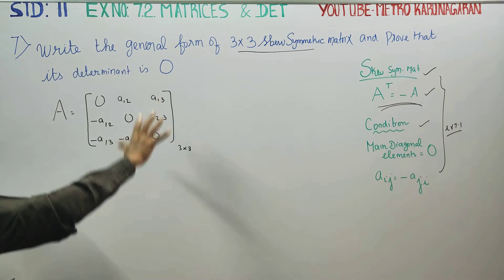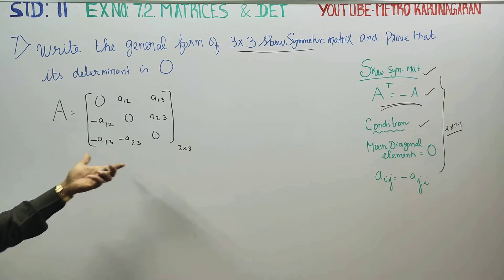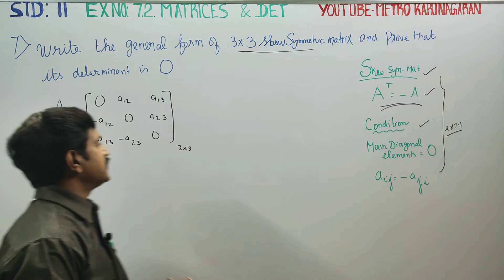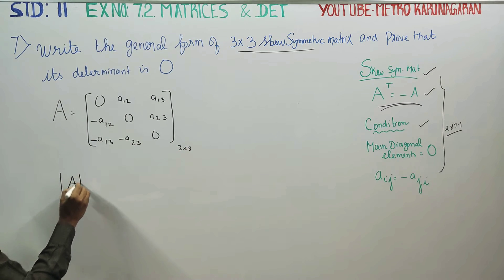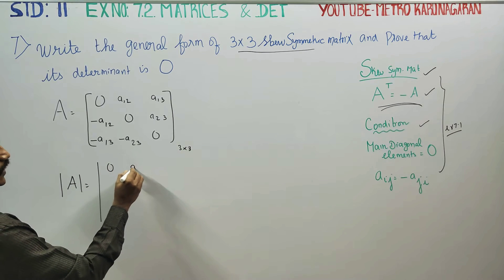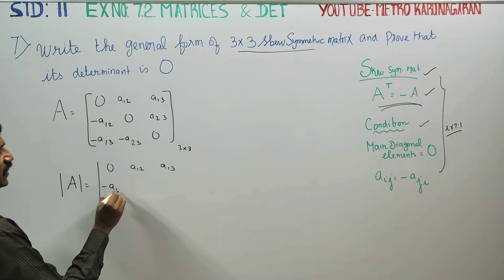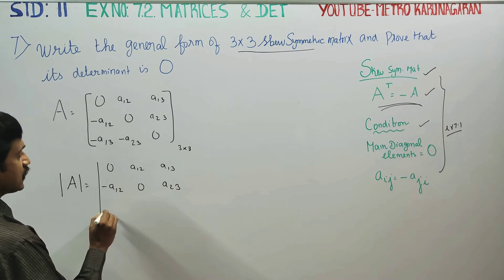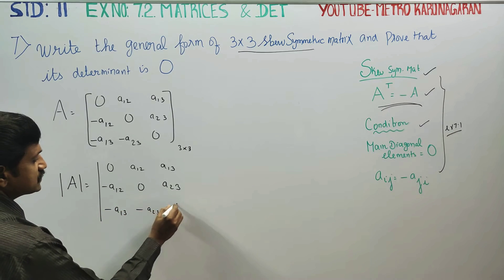This is the general format of a skew symmetric matrix, worth 1 mark. Now I am going to find the determinant value. The determinant is written with elements: first row is 0, A12, A13; second row is minus A12, 0, A23; third row is minus A13, minus A23, 0.